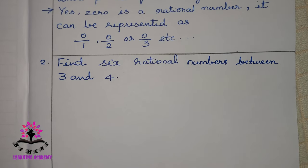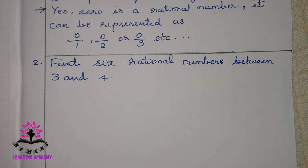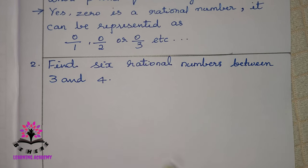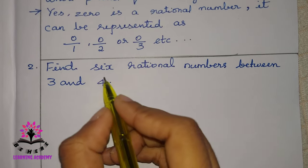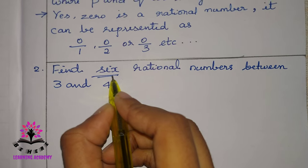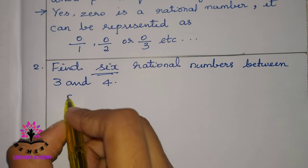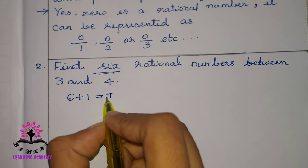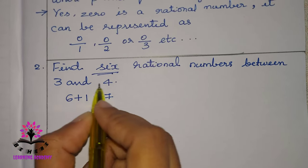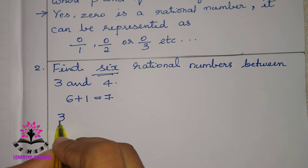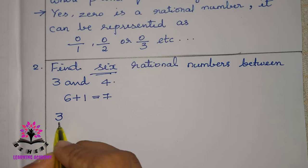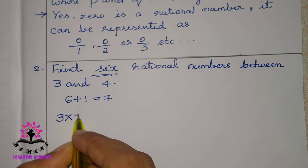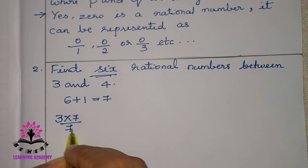The second question is: find 6 rational numbers between 3 and 4. They have asked for 6 rational numbers, so what you have to do is add 1 to it. 6 plus 1 gives you 7. Then you find rational numbers between 3 and 4 — first write 3 and multiply and divide by 7.